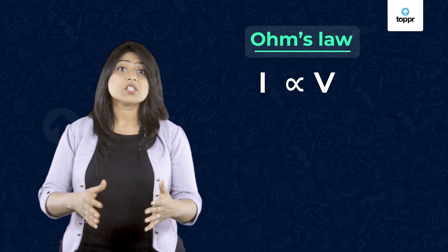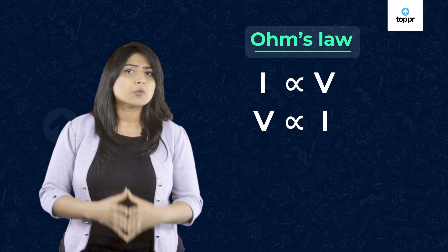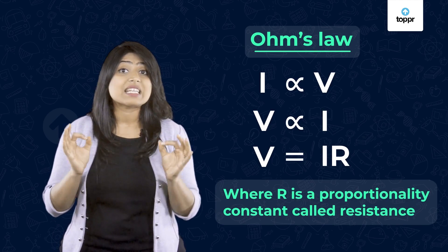We can also say the reverse, right? That is, V is directly proportional to I. Let's replace the proportionality sign with equality using a constant and call it R. This constant of proportionality R is called the resistance.